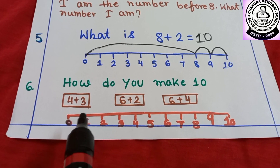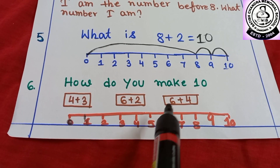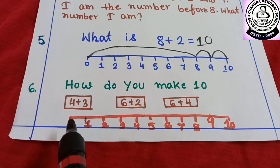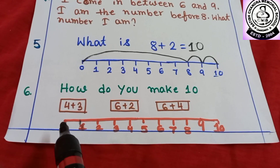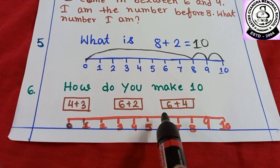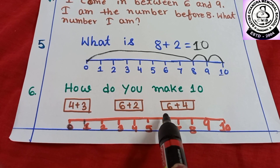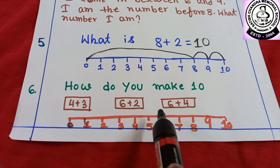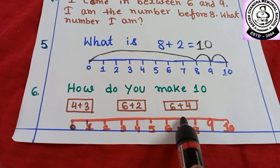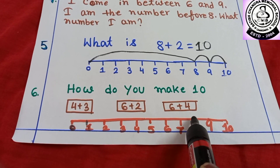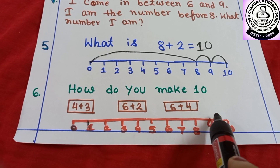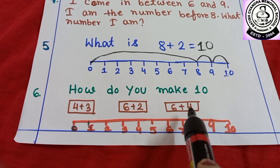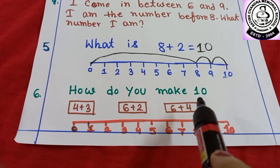Then, 6 plus 4. You have to jump from 0 to 6, then after 6, jump 4 times: 1 time, 2 times, 3 times and 4 times. So, 6 plus 4 is equal to 10. Understood?